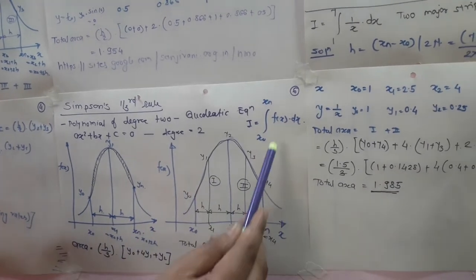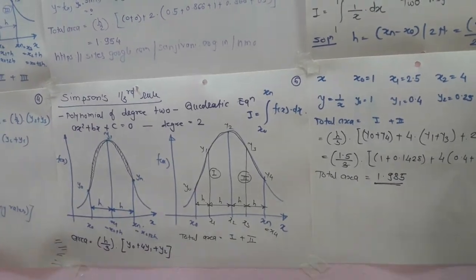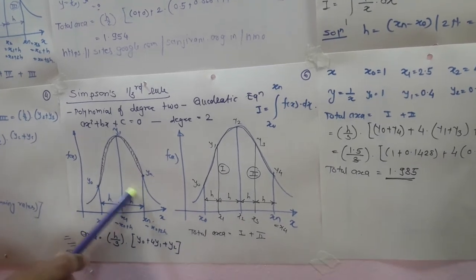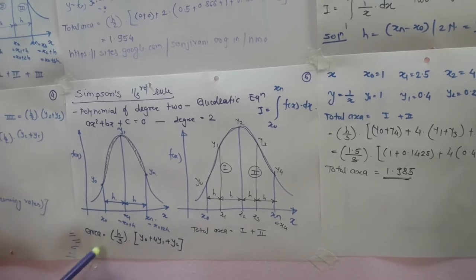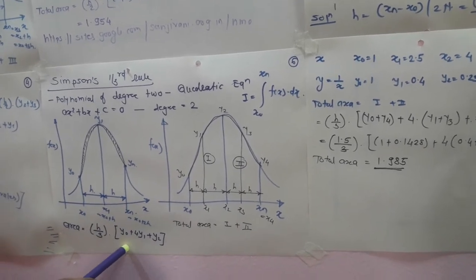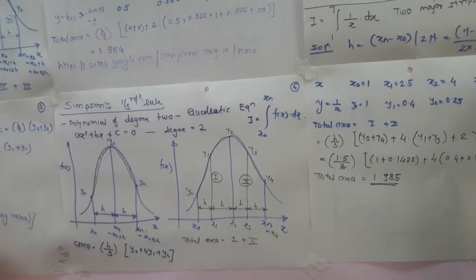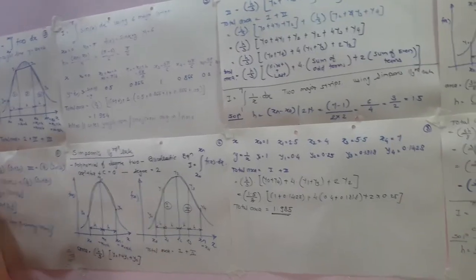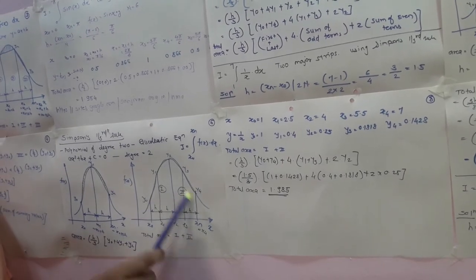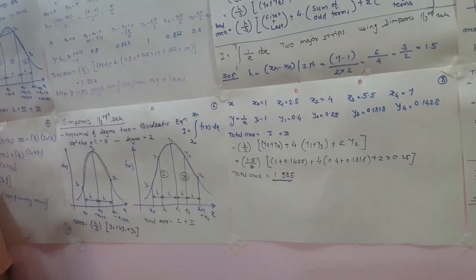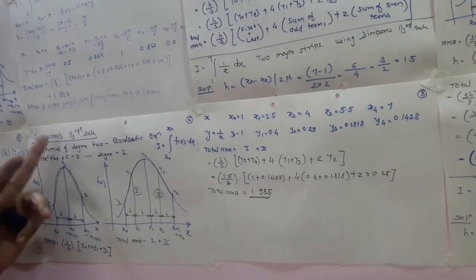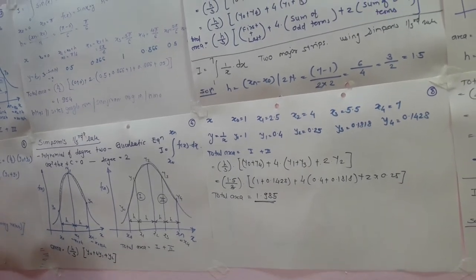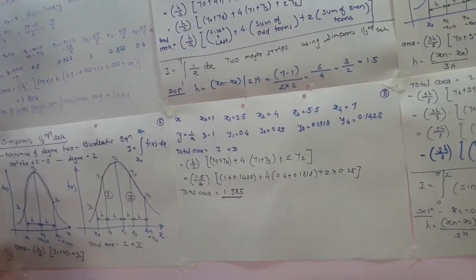Suppose we want to evaluate the integration of f(x) dx with limits from x₀ to xₙ. For a single major strip, each major strip is divided into two sub-strips. The formula is: (h/3) × (y₀ + 4y₁ + y₂), where h = (xₙ − x₀) / (2n). If using two major strips, the total number of strips required is 4. In Simpson's One-Third Rule, the total number of strips equals 2 times the number of major strips, as every major strip is divided into two sub-strips.